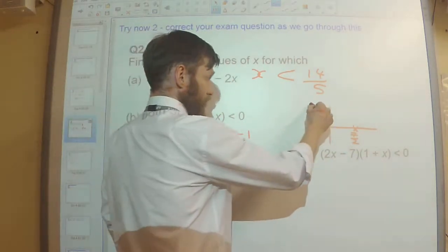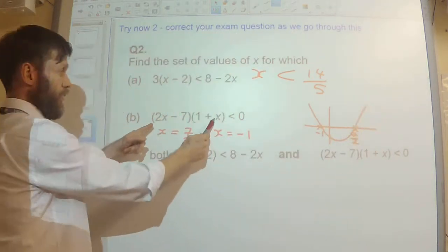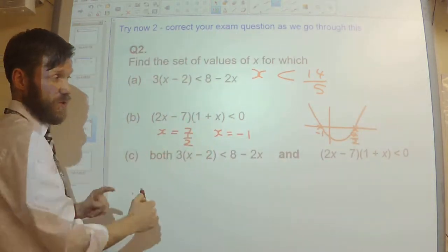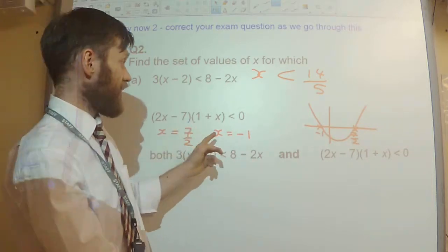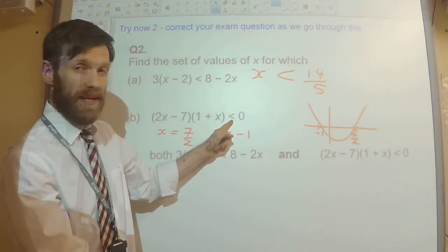So I'm going to draw it in now, I know it's going to be a positive x squared, so I know it's a U shape. And now I'm looking at my curve and I'm saying, when is it below 0?